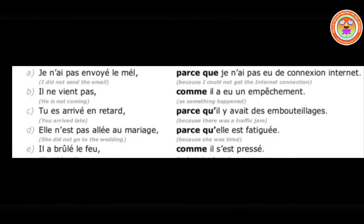Now the answers: Il n'a pas envoyé le mail — parce que je n'avais pas de connexion à internet — because I didn't have any internet connection. Il ne vient pas — comme il a eu un empêchement — he has had something else happen to him. Tu arrives en retard — parce qu'il y avait un embouteillage — because there was a traffic jam. Elle n'est pas allée au mariage — parce qu'elle était fatiguée — because she was tired. Il a brûlé un feu — comme il était pressé — like he was in a hurry.